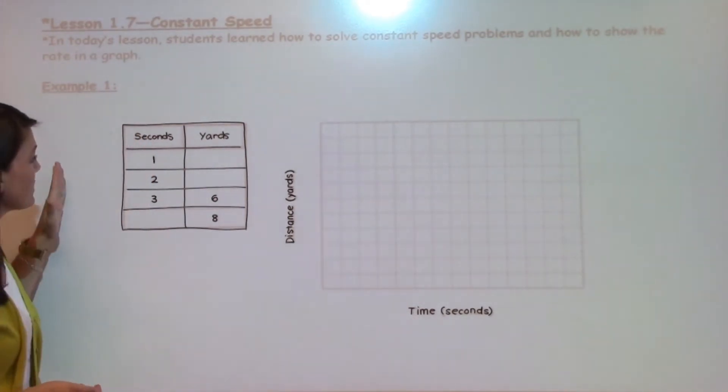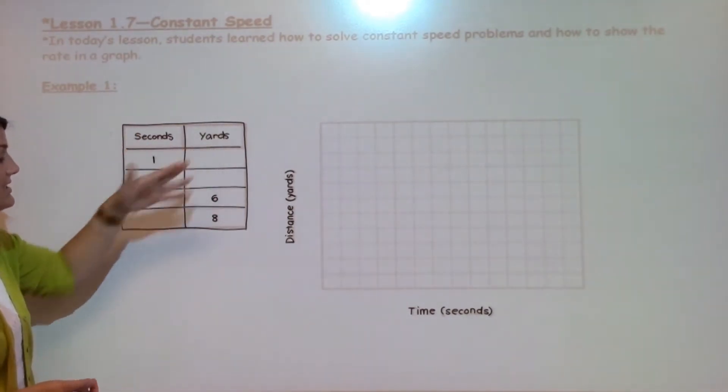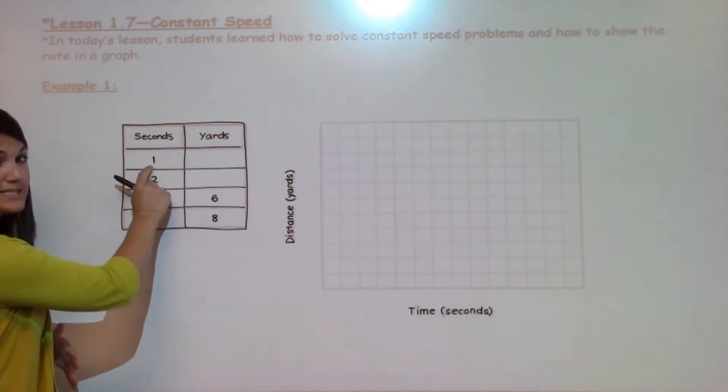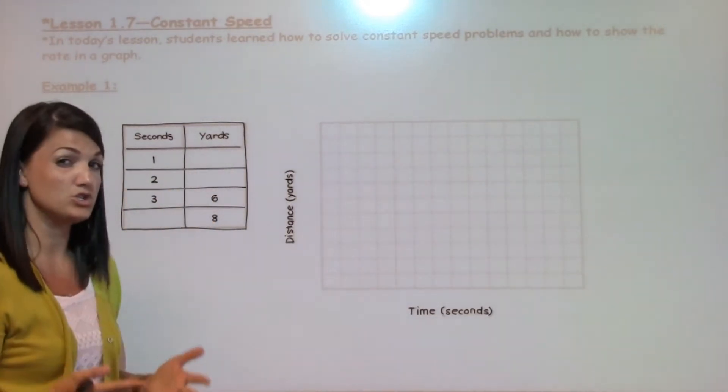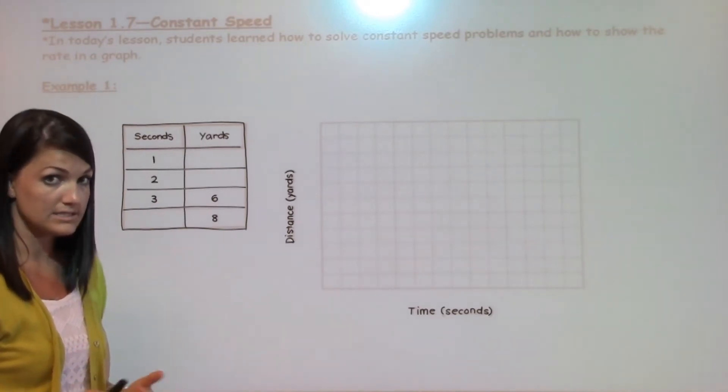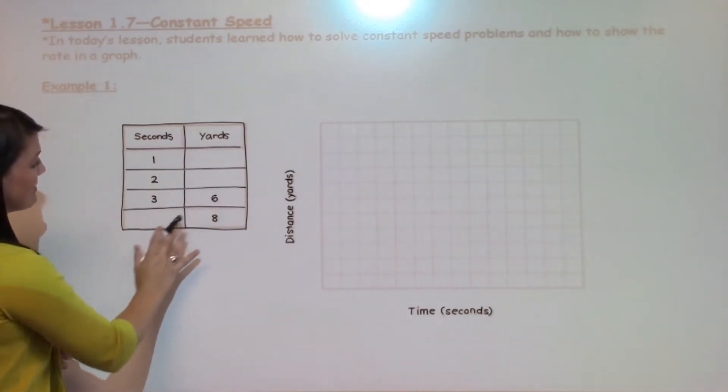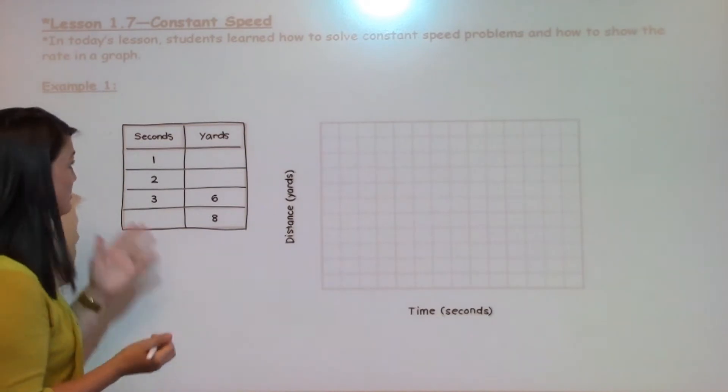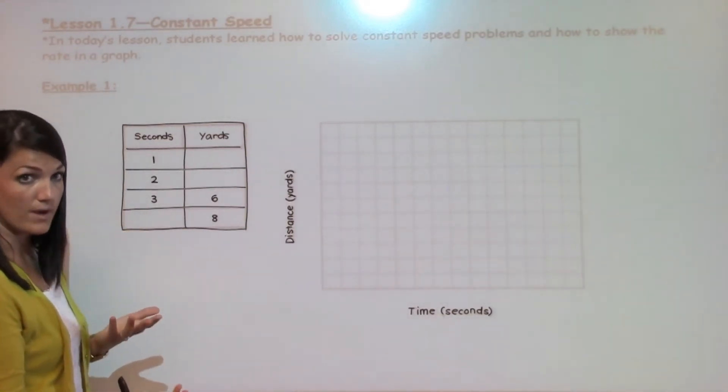Here we have in our rate table seconds and yards. When I look at one second, I do not know how many yards that is, so I do not know my unit rate. I have to look down the table and find where there is a connection between seconds and yards in order to find my rate.